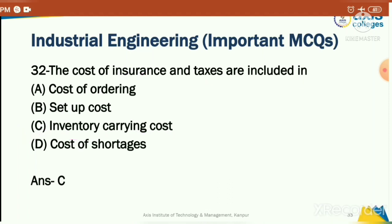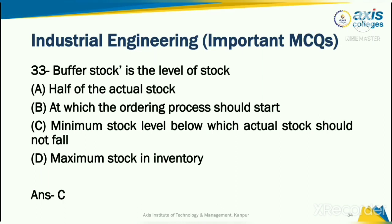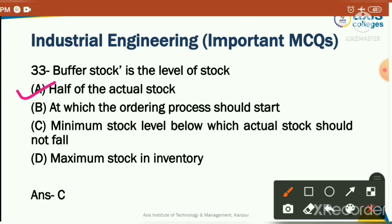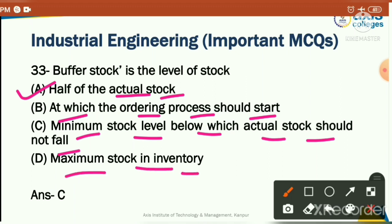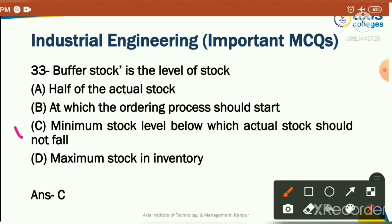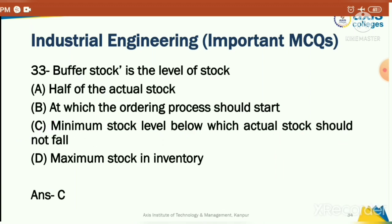Buffer stock is the level of stock — like a small extra stock kept aside — also called buffer stock. Options: the level of actual stock at which the ordering process should start, minimum stock level below which the actual stock should not fall, or maximum stock inventory. The correct answer is option C: minimum stock level. Buffer stock is the minimum stock below which actual stock should not fall — you should always have this minimum buffer available.